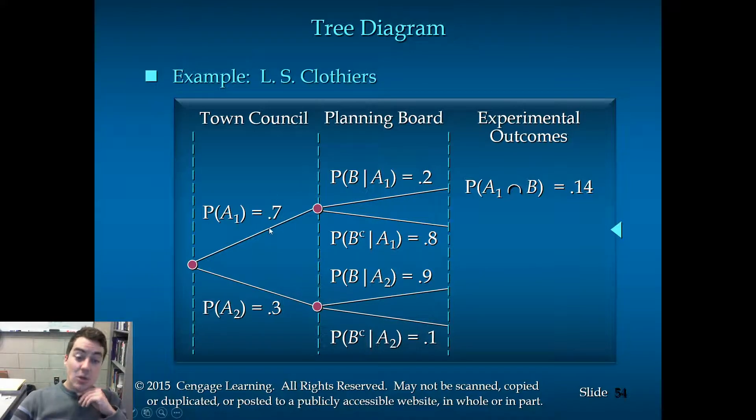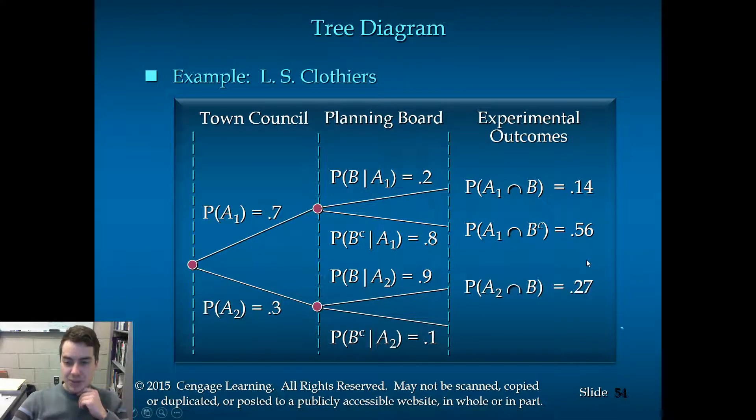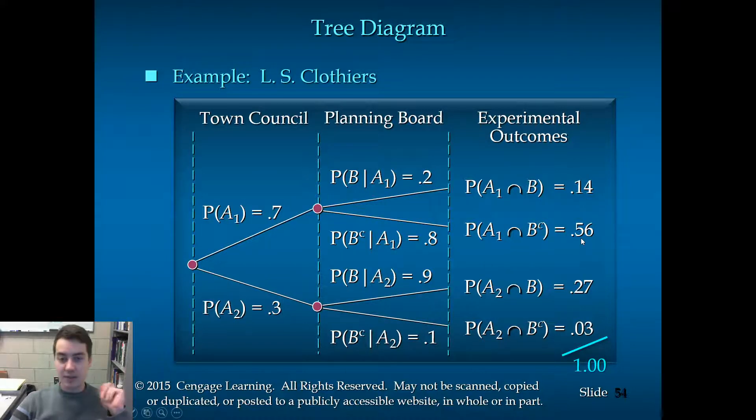So since we're using conditions on the final decision, that needs to go first. So if we multiply this number times this number, this is the multiplication rule. This gives us the intersection. So 0.7 times 0.2 is the equivalent to 2 times 7, 14. And you move the decimal place 2 over. So having A1 and B occurring at the same time has a 14% chance. Similarly, A1 and B complement is 56%. A2 and B is 27%. A2 and B complement is 3%. Of course, if we add them all up, we'll find that it's 100%, which is good because that's what we should have.